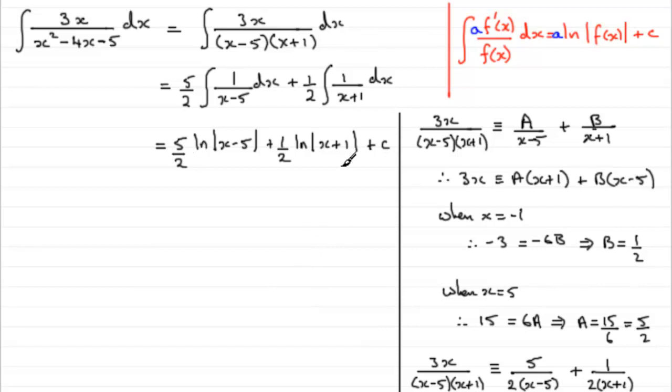Now you could leave it like this, but quite often we can simplify these further by using the rules of logs. What we need to do, or what we can do, is we can see that half is a common factor here. So we could pull out half in this particular example, and then write 5 multiplied by the natural log of x minus 5, and then plus the natural log of x plus 1, and then close the bracket off, plus c.